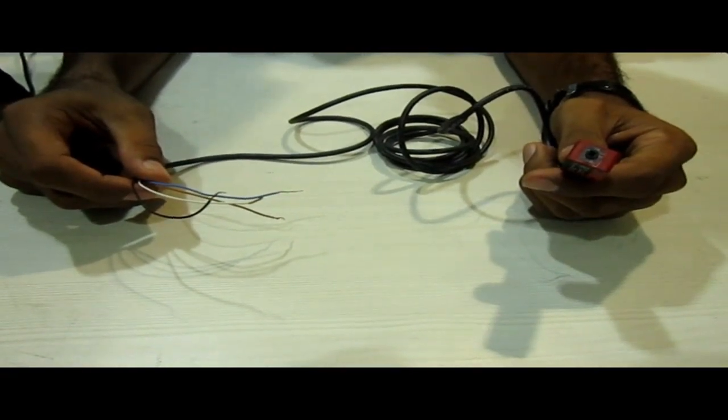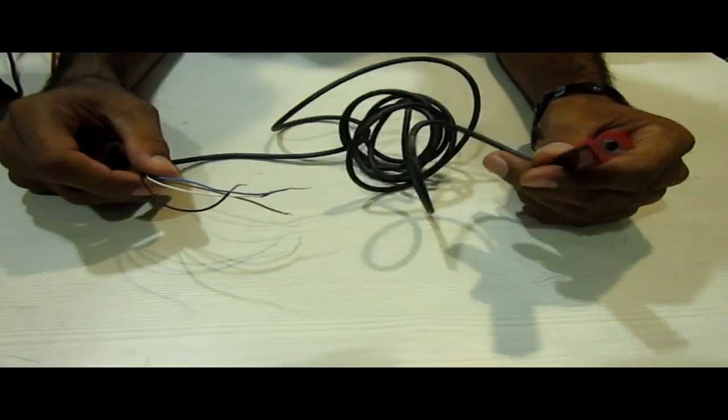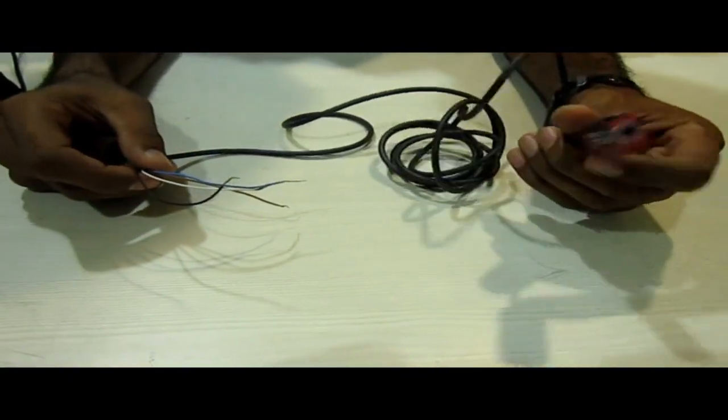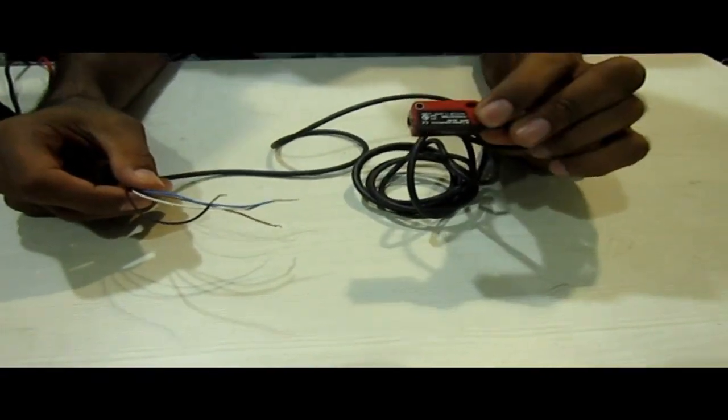In this video session we are going to learn about the working of photoelectric sensor. As you can see in my hand this is a photoelectric sensor by the company Leuens Electronics and its operating voltage is 10 to 30 volt which is embedded on the sensor.